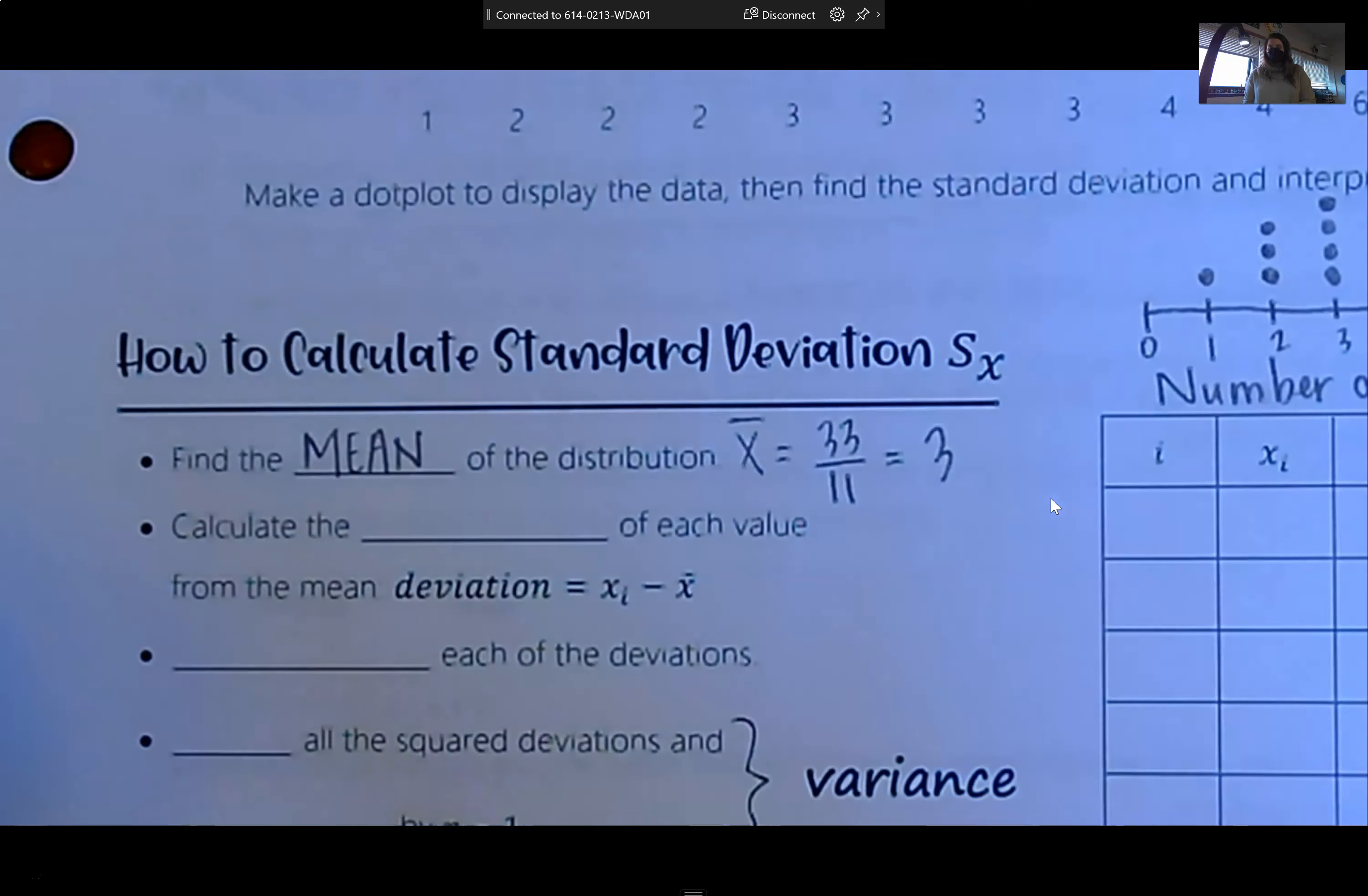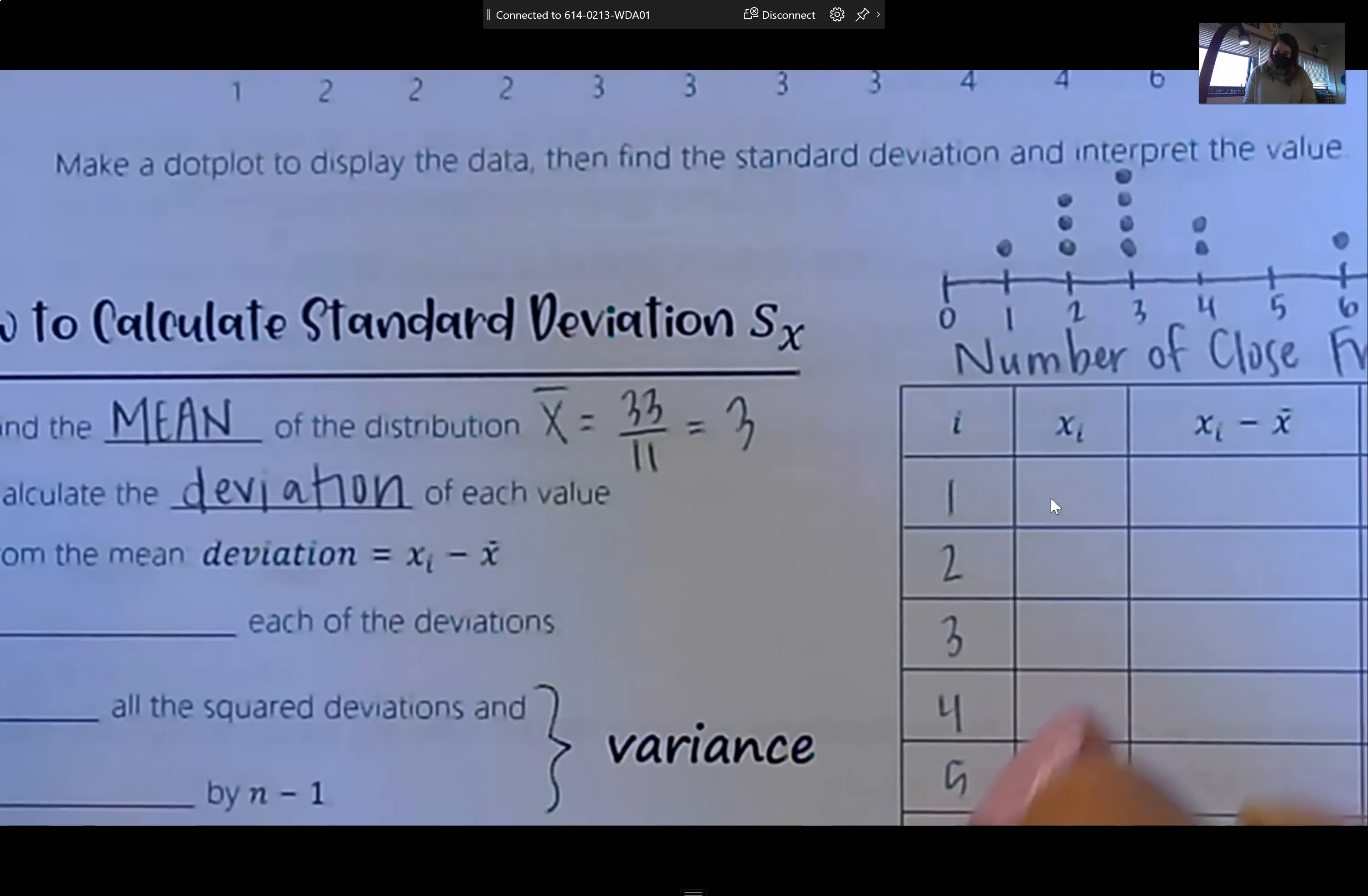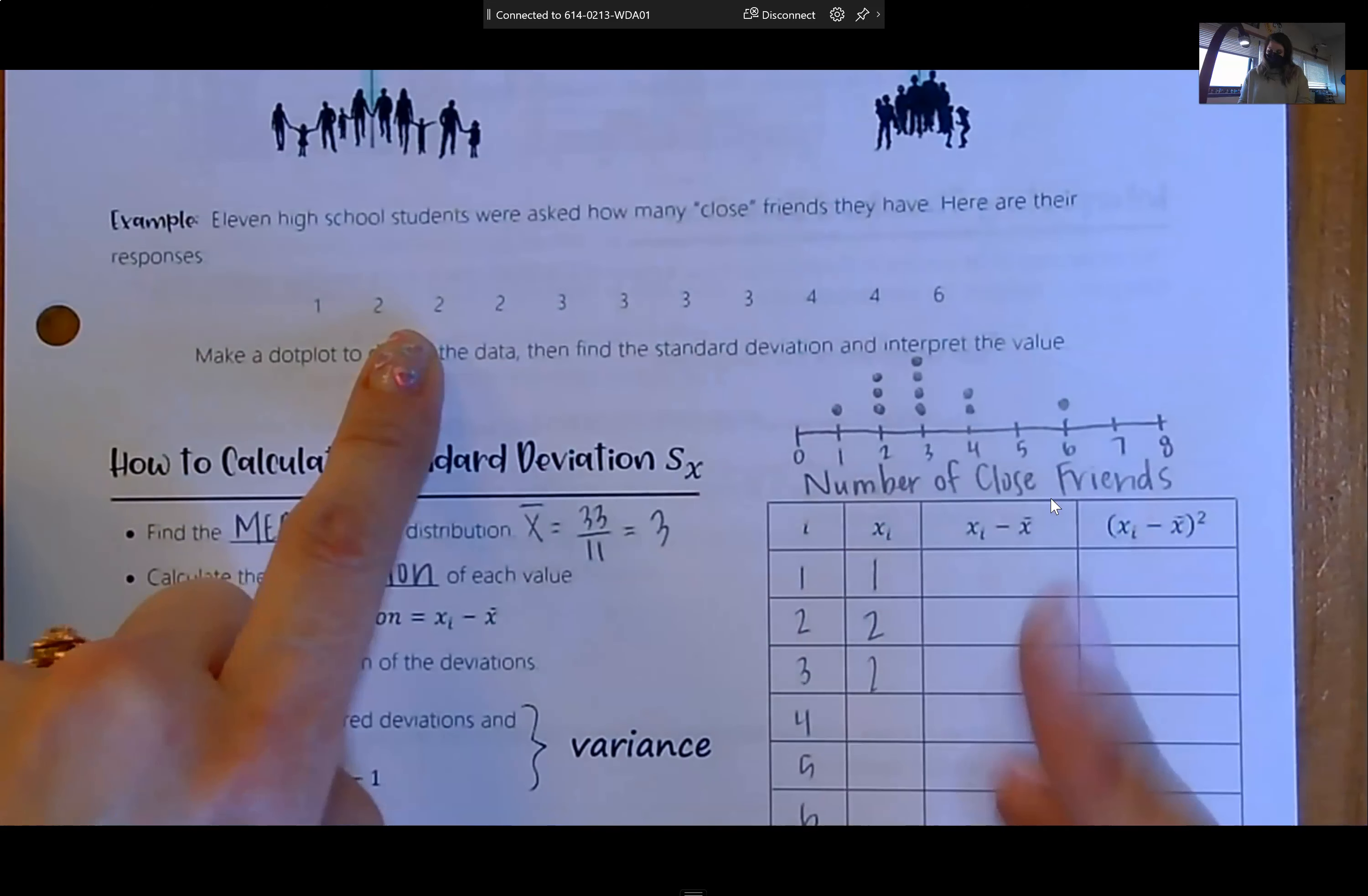So now we know our typical observation. Our students typically have 3 friends. Now what we want to do is calculate the deviation of each value from the mean. So the deviation is fancy for how far away from the mean is each observation. The notation that they use is i and x sub i. So i is your observation number. So we have 11 observations. So down this table, I'm just listing those. X sub i is the value of the first observation.